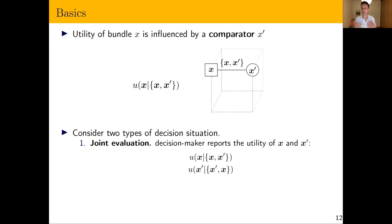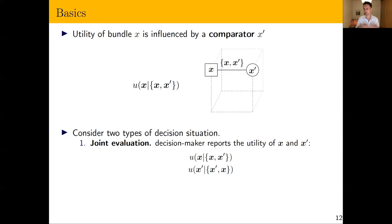We focus on two-object comparison sets and two types of decision. The first is joint evaluation: I show you two bundles and ask you to report the utility of both — through willingness to pay or some unincentivized solicitation. The second type is binary choice data: I give you a two-element choice set and ask you to choose between them. Both types invoke this comparison between x and x′.